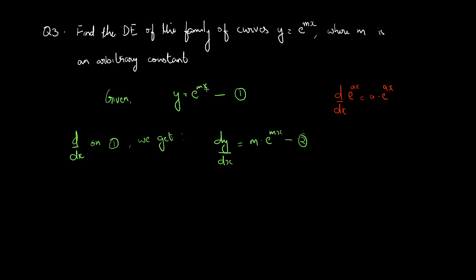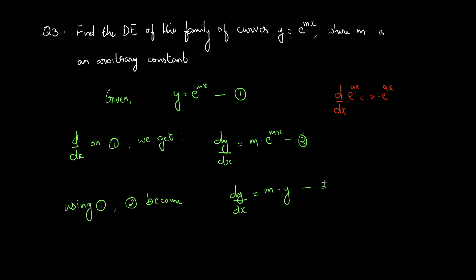From equation 1 we know that y equal to e raised to mx. We substitute e raised to mx by y in equation 2, giving dy by dx equal to m into y — equation 3. Therefore, m equal to 1 by y into dy by dx. We have our constant expressed in terms of y and the derivative — equation 4.